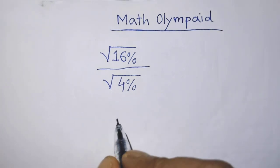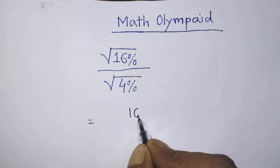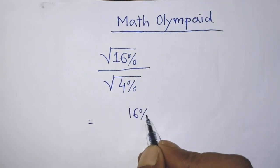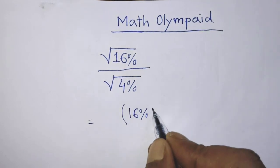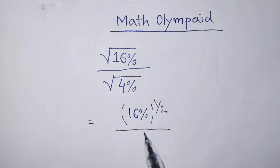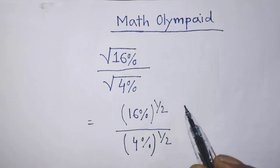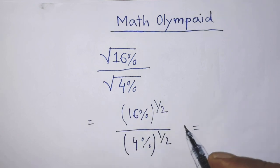In the first step of the solution, it will be 16 percent whole to the power half. Over, similarly in the place of denominator, it will be 4 percent whole to the power one over two.